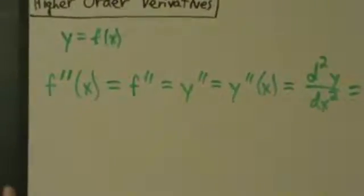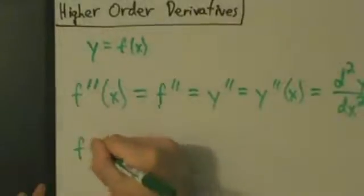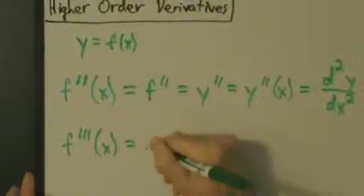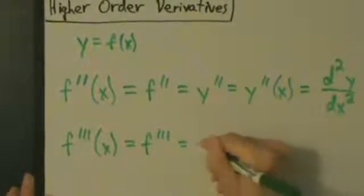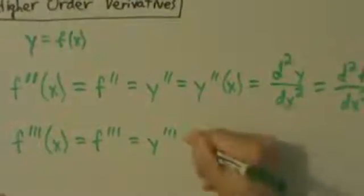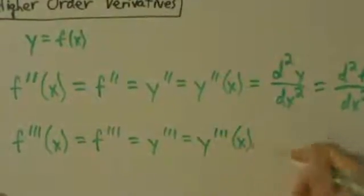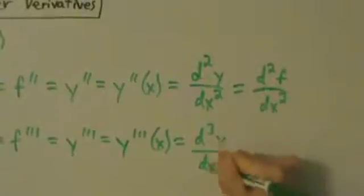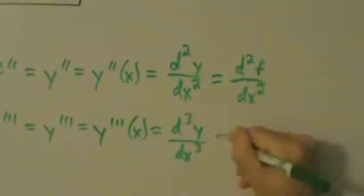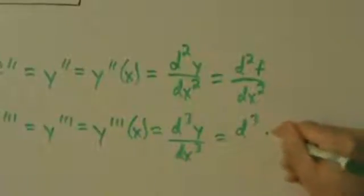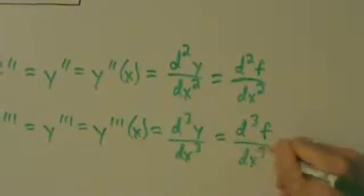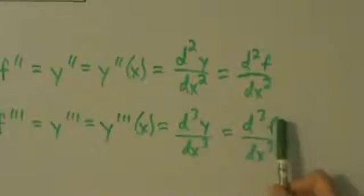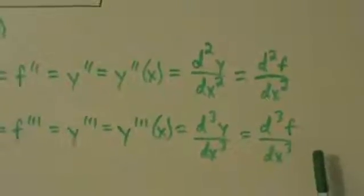For the third derivative, this will come as no surprise: f triple prime of x equals f triple prime, which is the same as y triple prime, or y triple prime of x. This is the same as d³y/dx cubed, or d³f/dx cubed — the third derivative of y with respect to x, or the third derivative of f with respect to x.